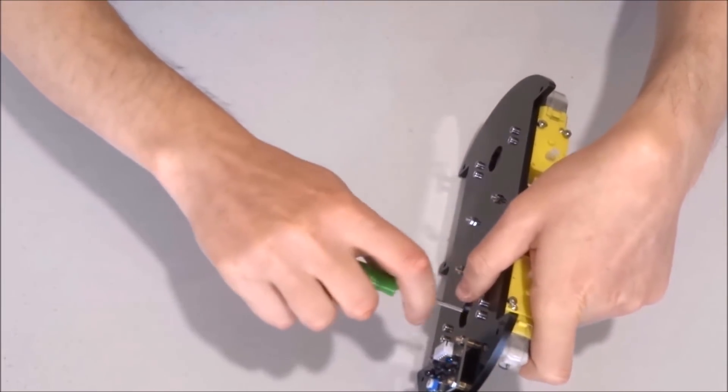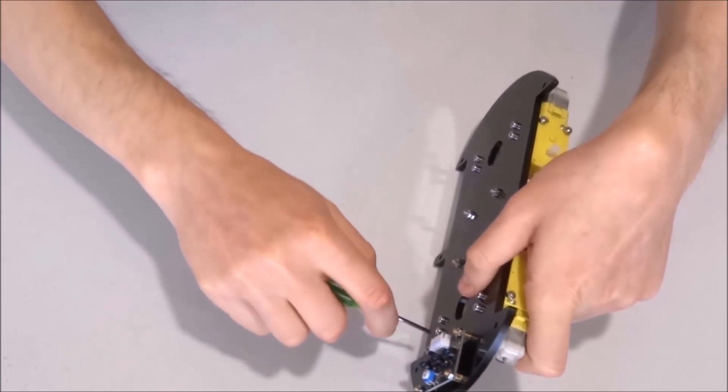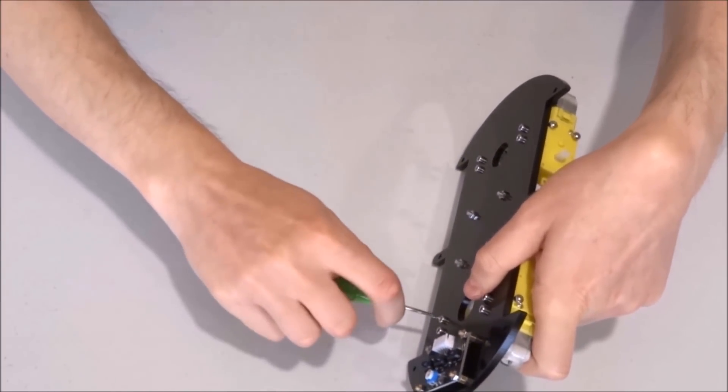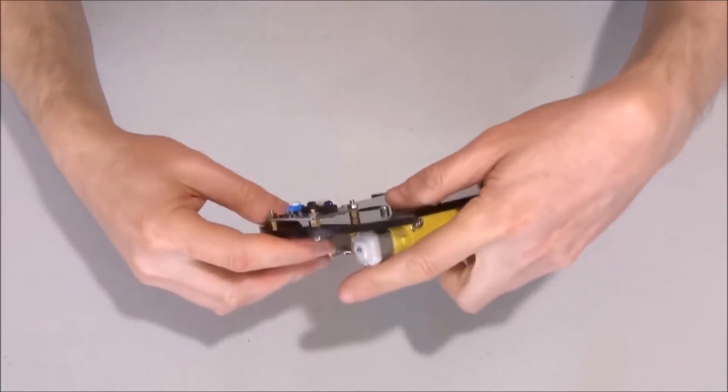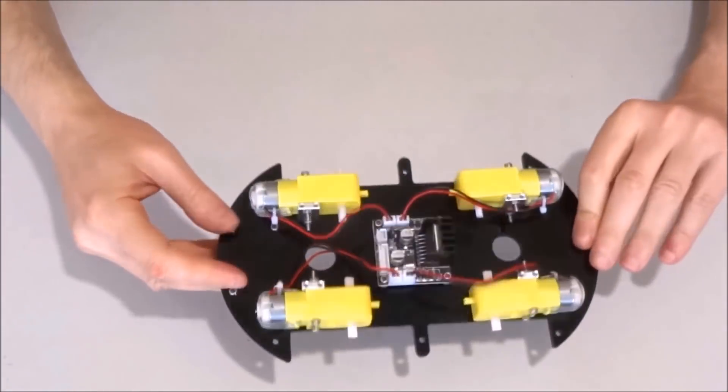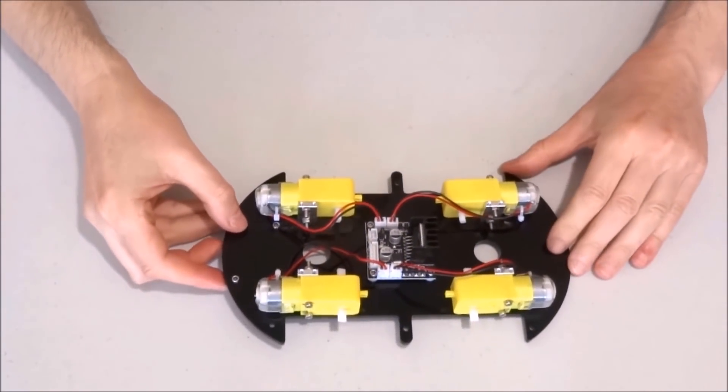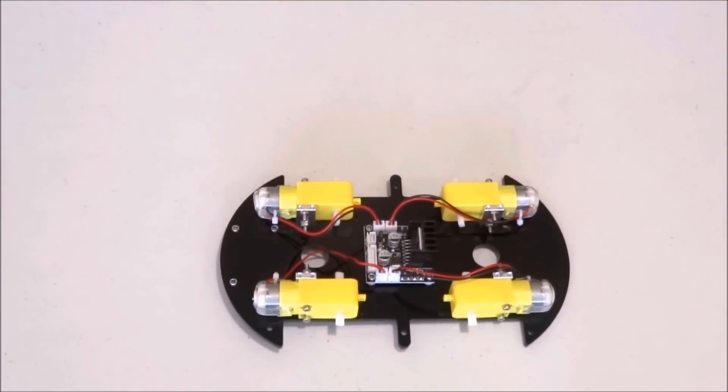And adjust the angle of the wheel. Other than that, this layer of the chassis should be completely assembled and ready to use. Now it's time to go to the upper layer of the robot.